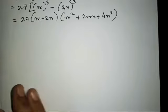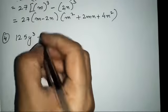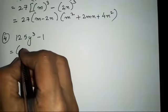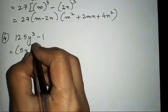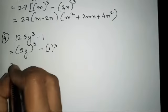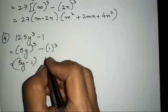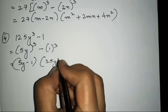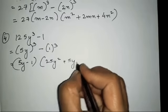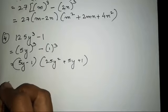The fourth sum is 125y cube minus 1. Since 5's cube is 125 and 1's cube is 1, this was easy. So a is 5y and b is 1, giving us 5y minus 1, and then 25y square plus 5y plus 1. If you all have followed my previous exercise, this step will be very easy for you to write. Do follow my previous video.